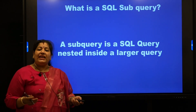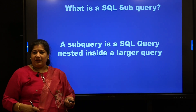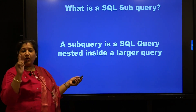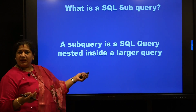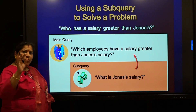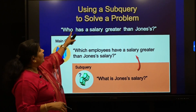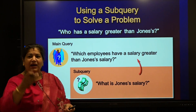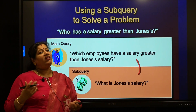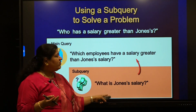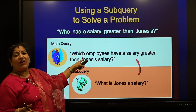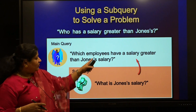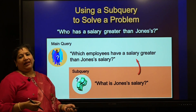Generally, in a WHERE clause of a SELECT statement, I can write another SELECT. When I repeat this, it becomes nested subqueries, and by default, one subquery inside your SELECT becomes a simple subquery. For example, if my requirement is to find who has a salary greater than Jones, that becomes the outer and inner query concept, which we call as subqueries.